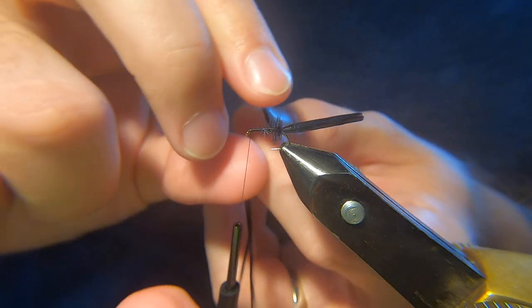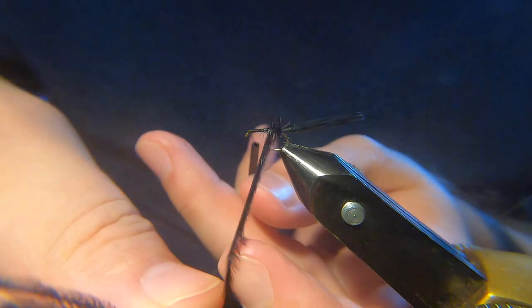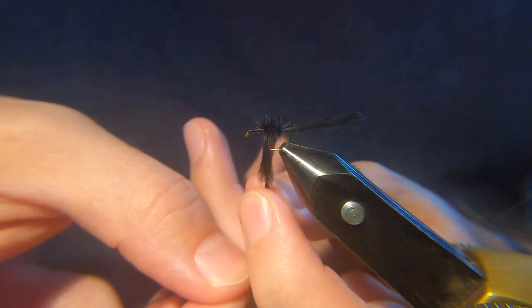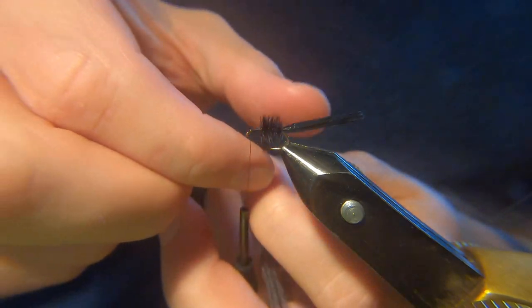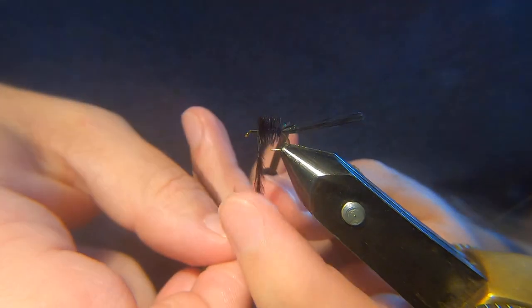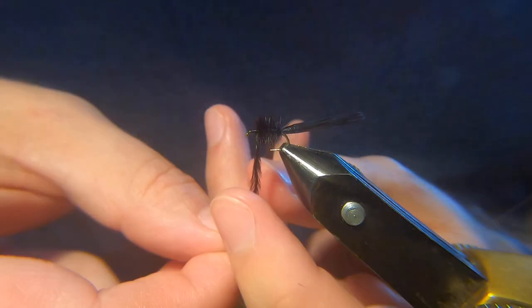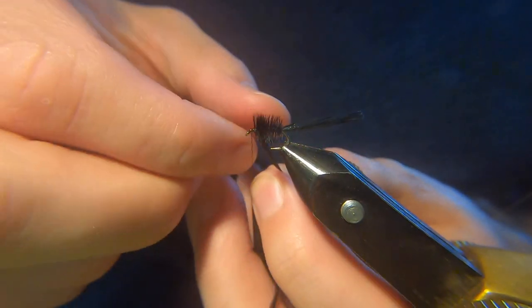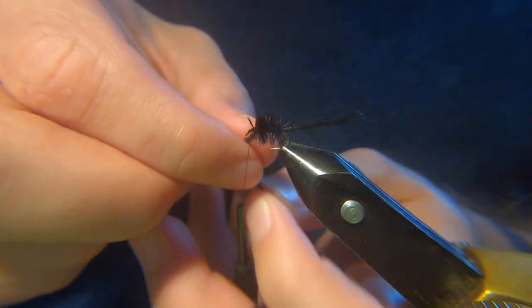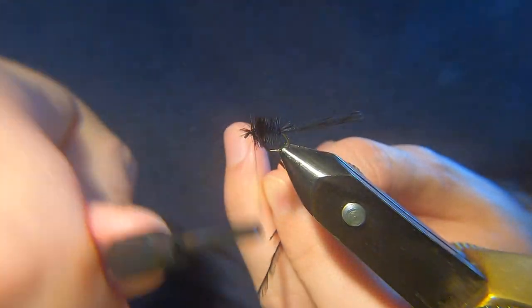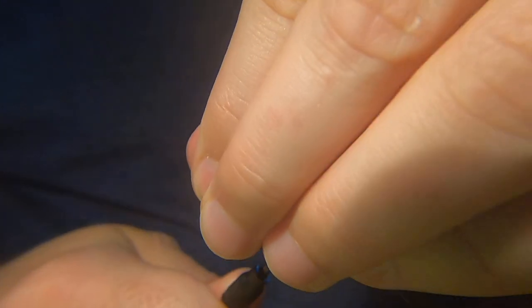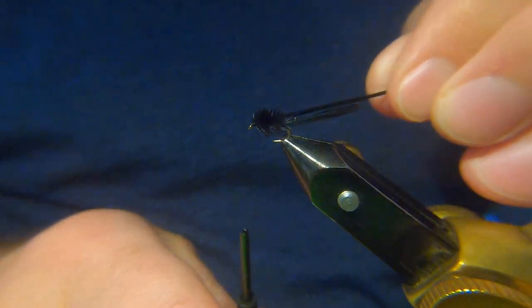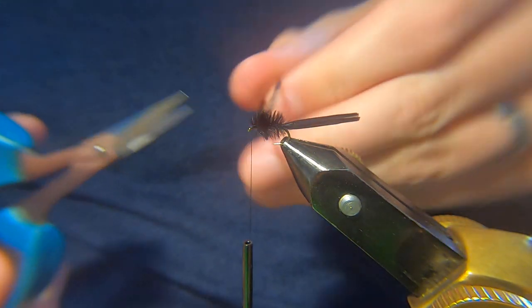Just wind the ostrich herl up. Just about right. Again this is another one of these flies that you don't have to be too neat with. Trim them off.